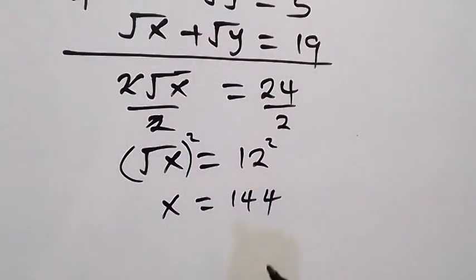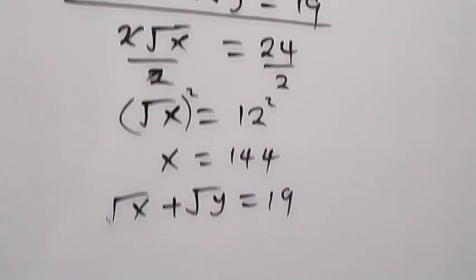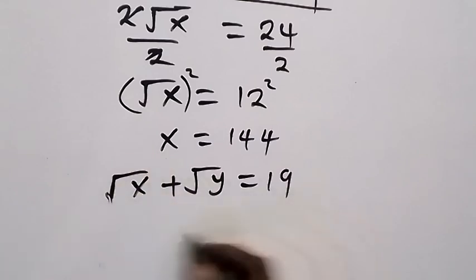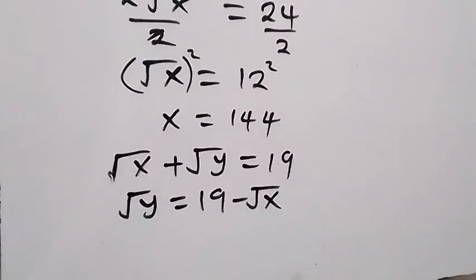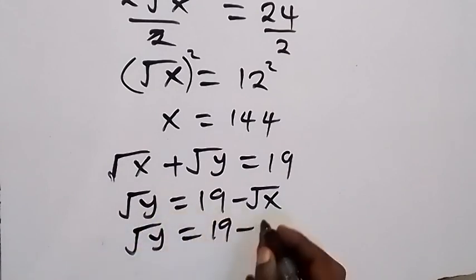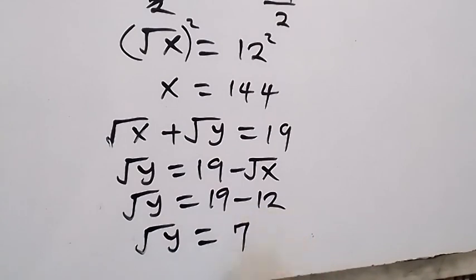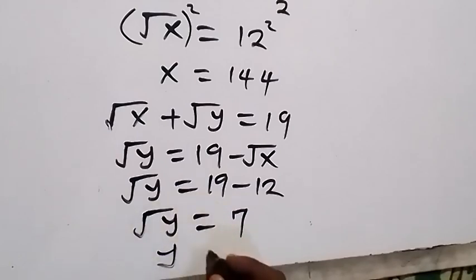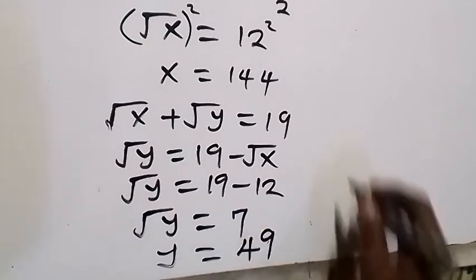We substitute x into equation two. From equation two, root x plus root y equals 19. Since we want y, we rearrange to get root y equals 19 minus root x. Since x is 144, root x is 12, so root y equals 19 minus 12, which is 7. Squaring both sides gives y equals 49.